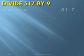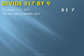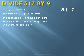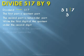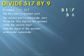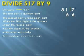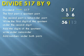Here is another example: divide 517 by 9. The dividend 517 is divided into two parts — quotient part 51 and remainder part 7. Write the first digit of the quotient (5) under the second digit (1). Add both digits of the quotient: 5 plus 1 equals 6, written under 7. Adding the numbers under both parts gives 56 and 13. Since 13 is greater than 9, we continue the division process.